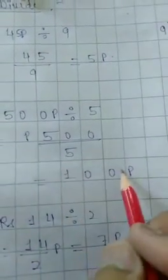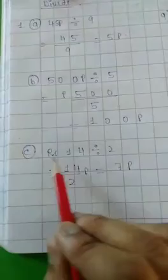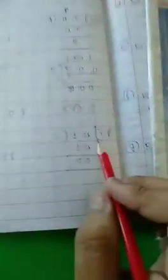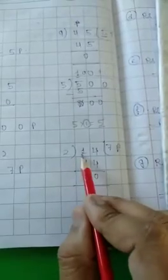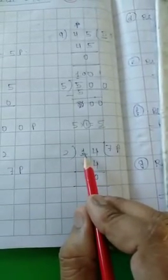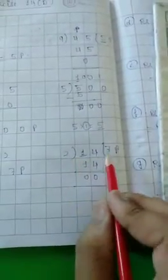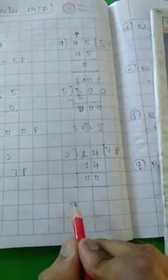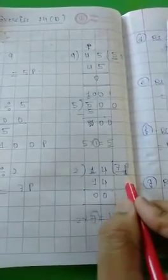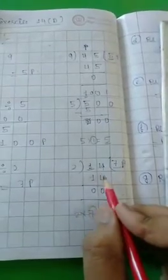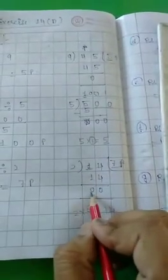Next, question number C: rupees 14 divided by 2. First, 1 divided by 2 — 1 is smaller, so we take 14 divided by 2. 2 times 7 is 14, so 7 goes in the quotient. 14 minus 14 is 0. Answer is 7 rupees.